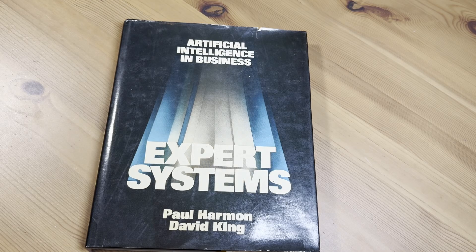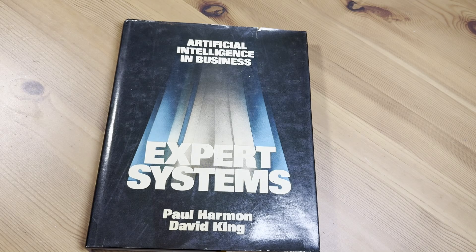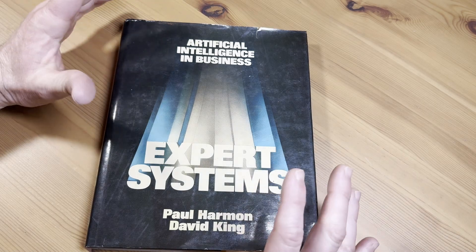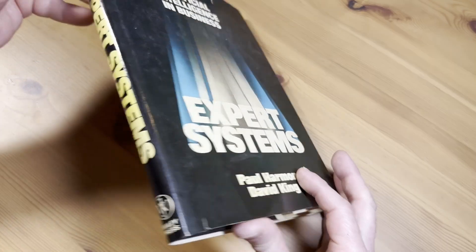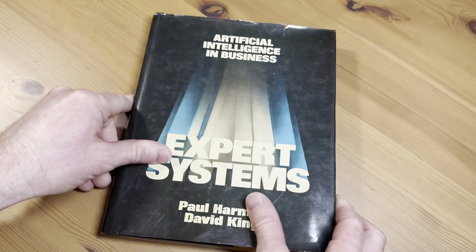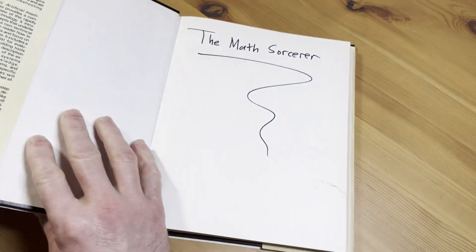Hi, everyone. In this short video, I want to show you this old book. It's called Artificial Intelligence and Business Expert Systems. It was written by Paul Harmon and David King.